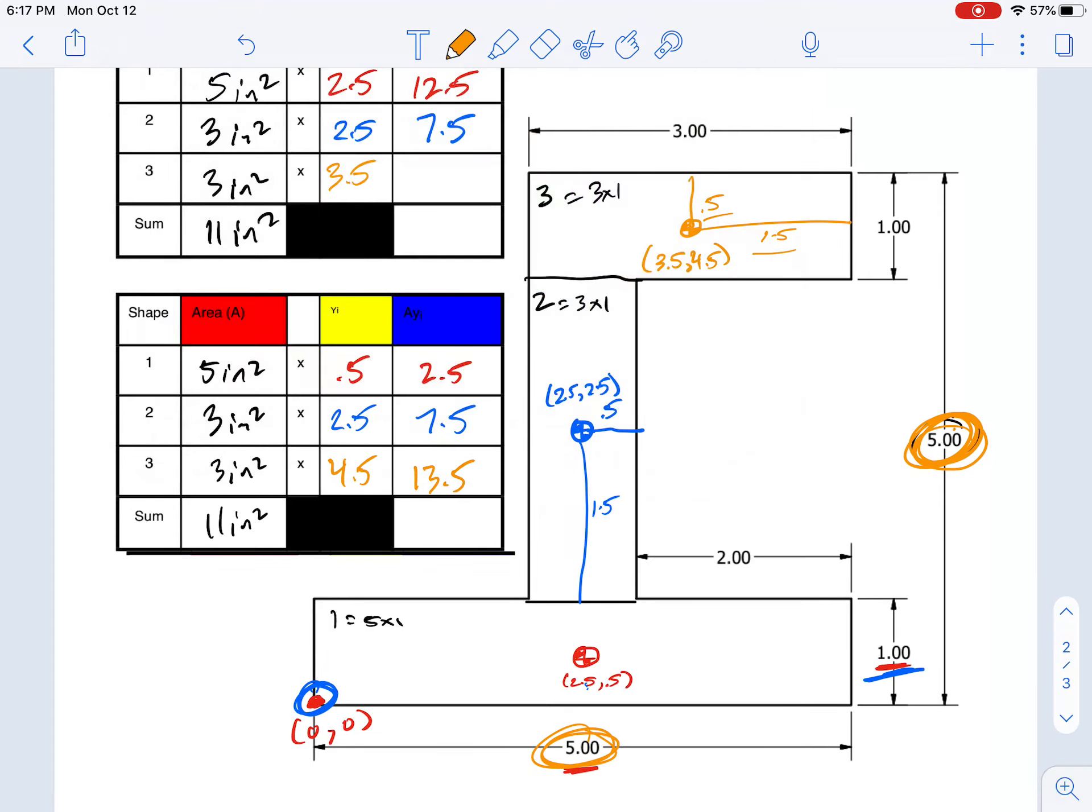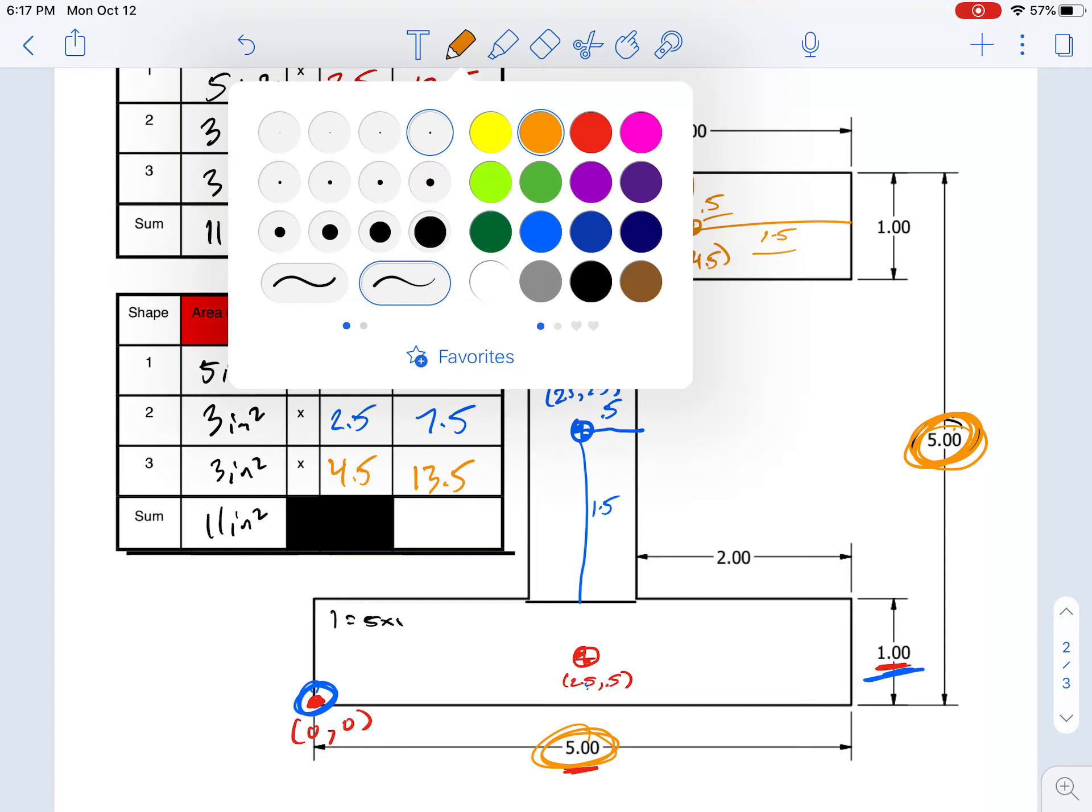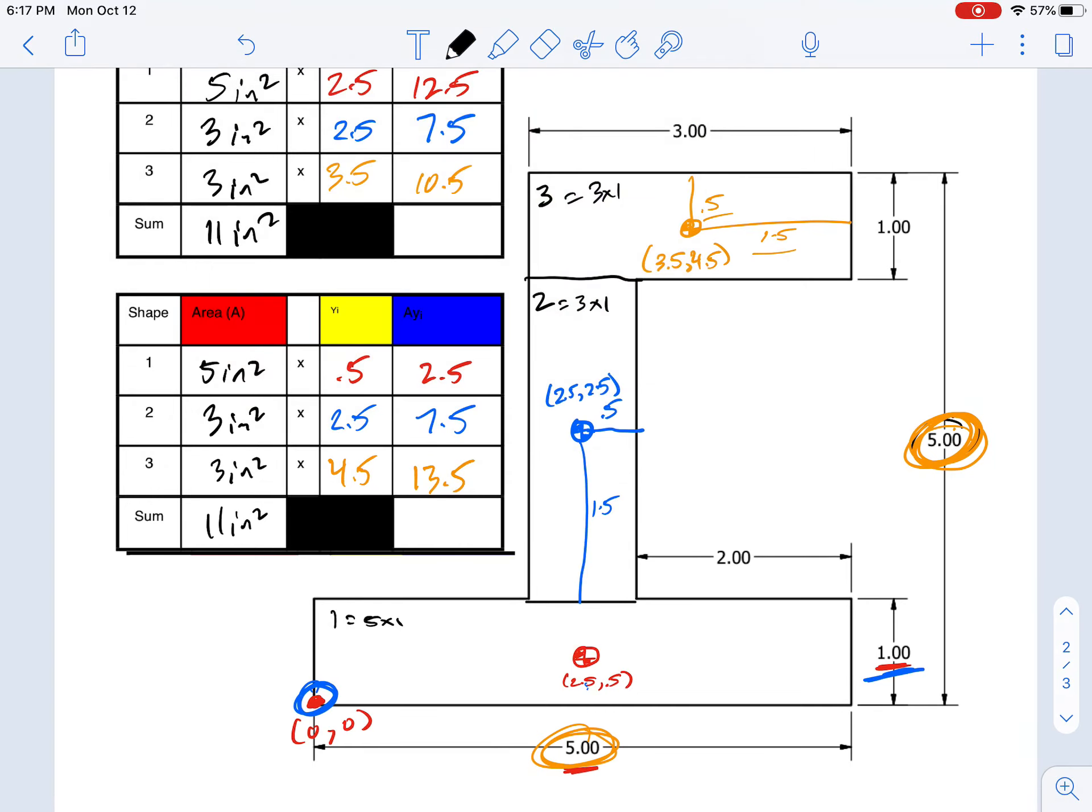So when we add these up, we see that this y location at the bottom, even though it's not the biggest shape, is having a huge impact on the overall area. Let's add this up: 2.5 plus 7.5 is 10, plus 13.5 is 23.5.